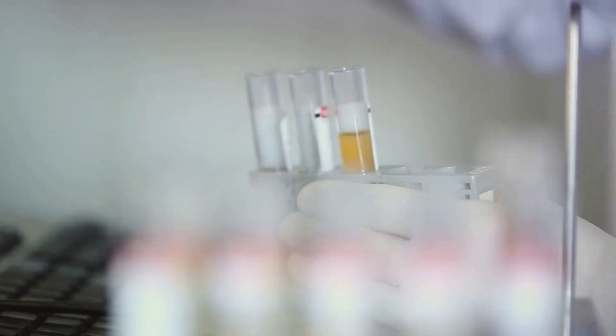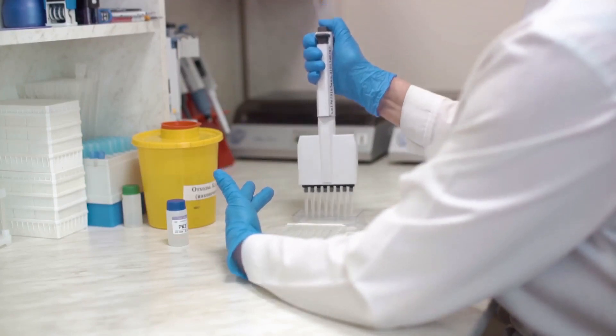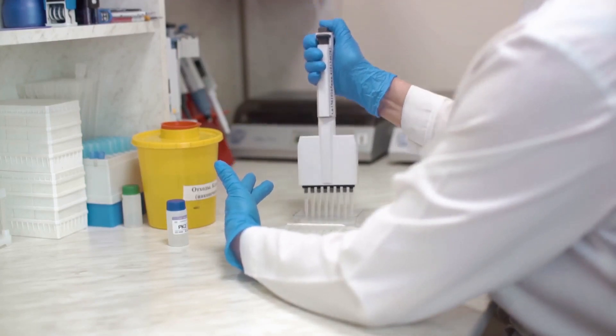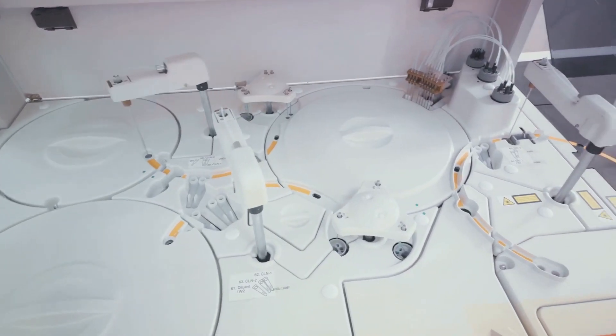As the fluid advances, it encounters the pretreated area. If the target substance, perhaps a specific protein or hormone, is present in the sample, it will bind to the antibodies or antigens on the strip, forming a complex.